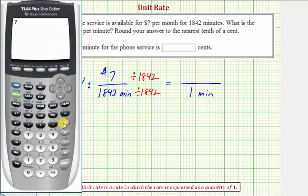So we have seven divided by 1,842, enter. We're asked to round to the nearest tenth of a cent. This is in dollars, so we'll round to three decimal places, which would be approximately .004.